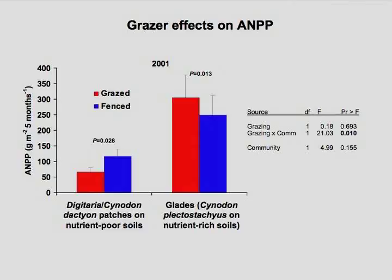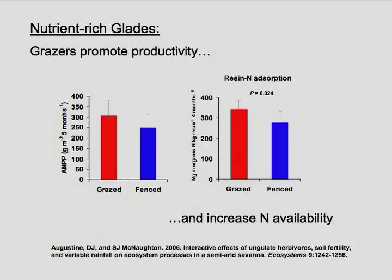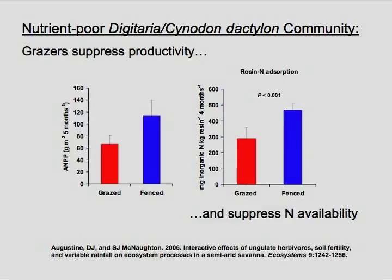We were interested in how this is linked to nutrient availability in the soil. Where we had a positive effect of grazers on productivity — in the nutrient-rich sites — we also had a positive effect of grazers on soil nitrogen availability, measuring inorganic nitrogen availability in the soil during the growing season. Where we had a negative effect of grazing on productivity, grazers also had a negative effect on soil nitrogen availability. So effects on nitrogen availability in the short term parallel effects on productivity.